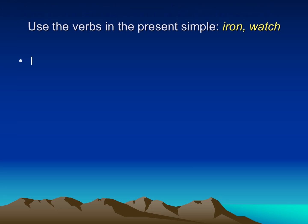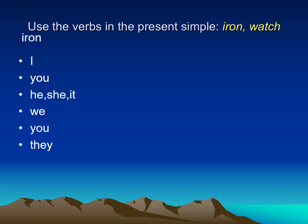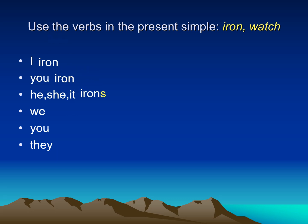Now let's look at the verbs in the present simple: iron and watch. What's the difference? With 'iron', for I and you, I keep the verb as it is. But with he, she, or it, I have to add S — so it becomes 'irons'. With we, you, and they, I keep the verb as it is.